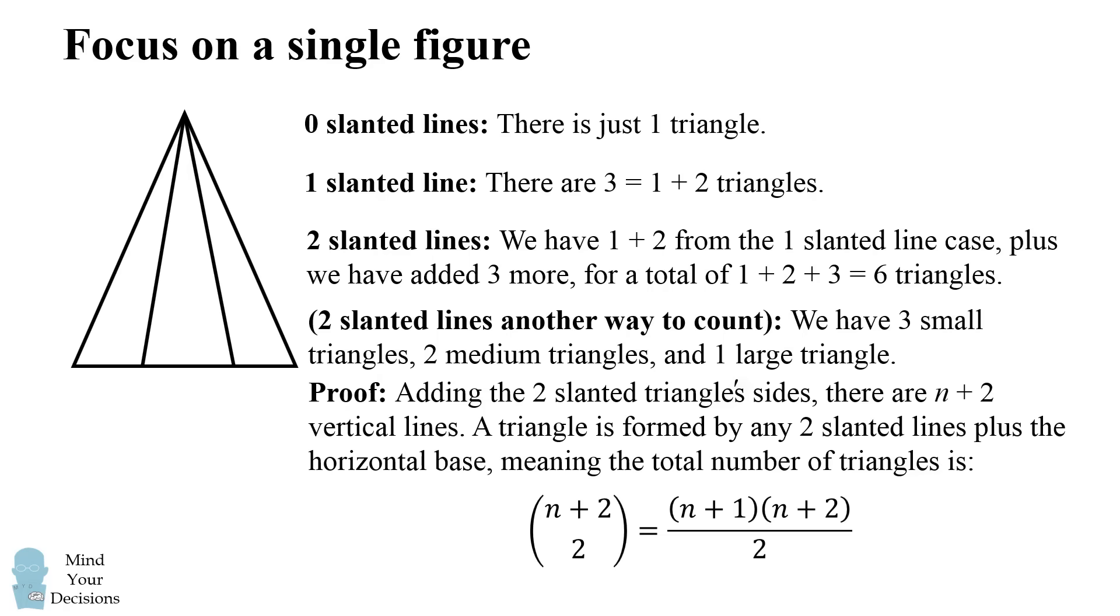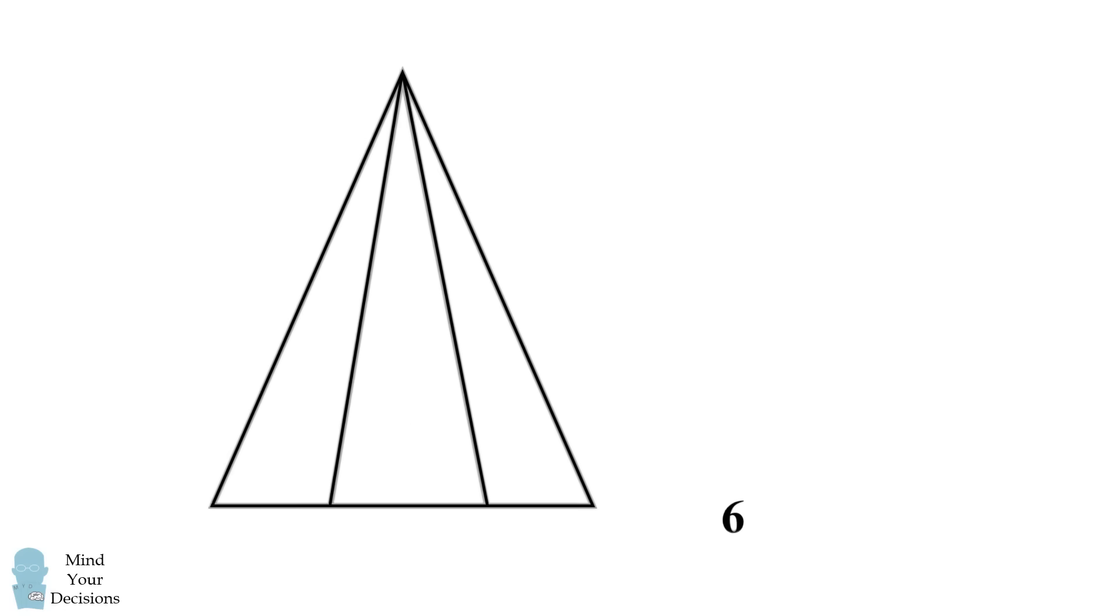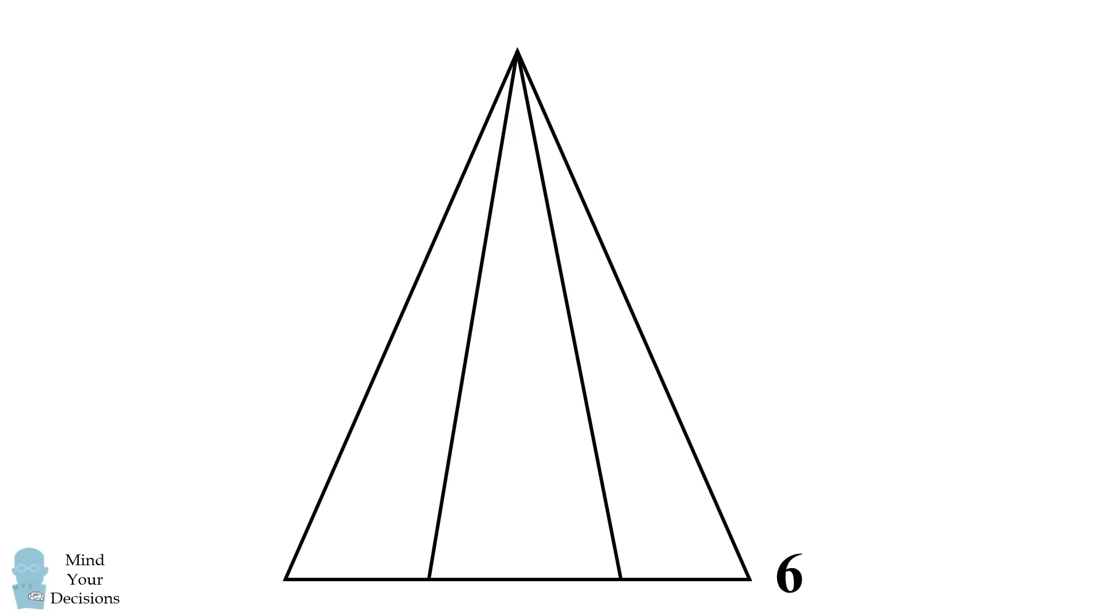So we figured out a general way to count the number of triangles in this kind of shape. So how does that help us solve the original problem? Well, this figure has a total of six triangles. Now let's scale it up a little bit. By the same logic, this small figure also has a total of six triangles, and this medium shape also has a total of six triangles.